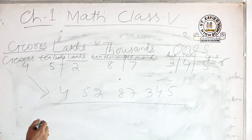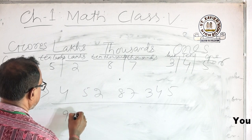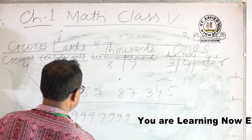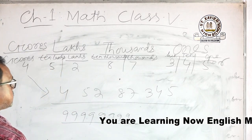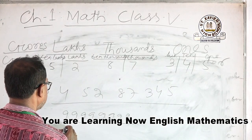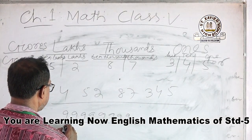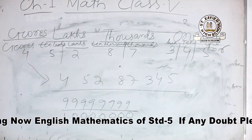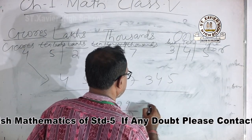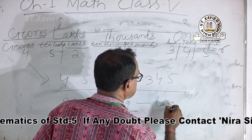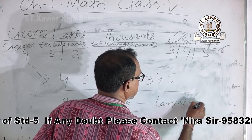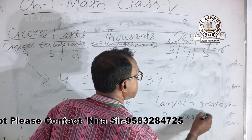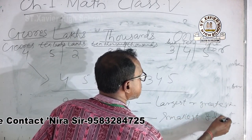If you write the greatest 8-digit number, it will be 99,999,999 — that is the greatest 8-digit number. And the smallest 8-digit number is 10,000,000 — that is the smallest one.